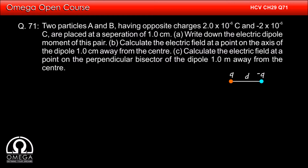Particles A and B having opposite charges 2×10⁻⁶ coulomb and −2×10⁻⁶ coulombs are placed at a separation of 1 cm. (a) Write down the electric dipole moment of this pair. (b) Calculate the electric field at a point on the axis of the dipole 1 cm away from the center. (c) Calculate the electric field at a point on the perpendicular bisector of the dipole 1 meter away from the center.